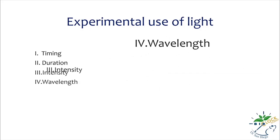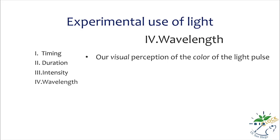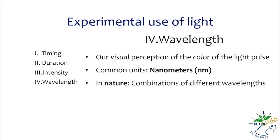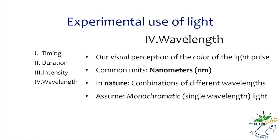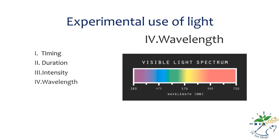The fourth factor is wavelength, which determines our visual perception of color. Wavelength is expressed in units of nanometers. In nature, the visual appearance of white or colored light is a result of a combination of different wavelengths of light. For now, we will discuss our experiments under the assumption that our light is monochromatic, which means it consists of only a single wavelength of light. You can see here that the visible light spectrum for humans extends from 380 nanometers, which is perceived as violet light, to 750 nanometers, which is perceived as red light.